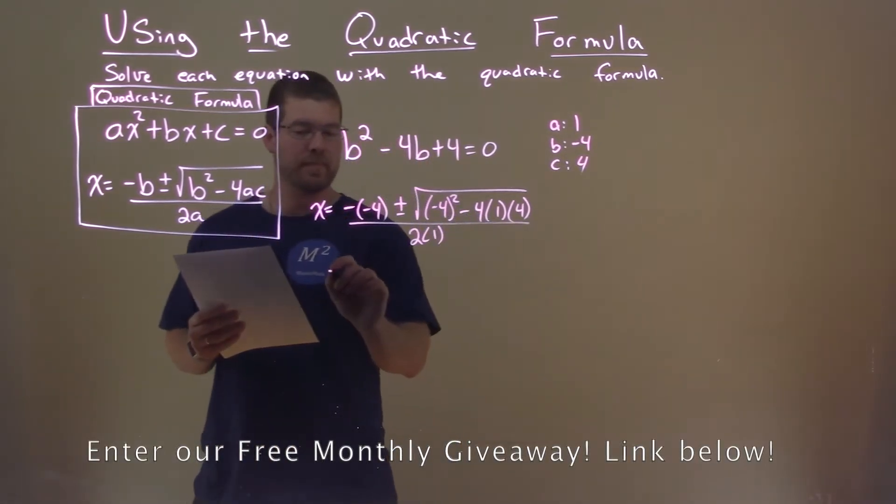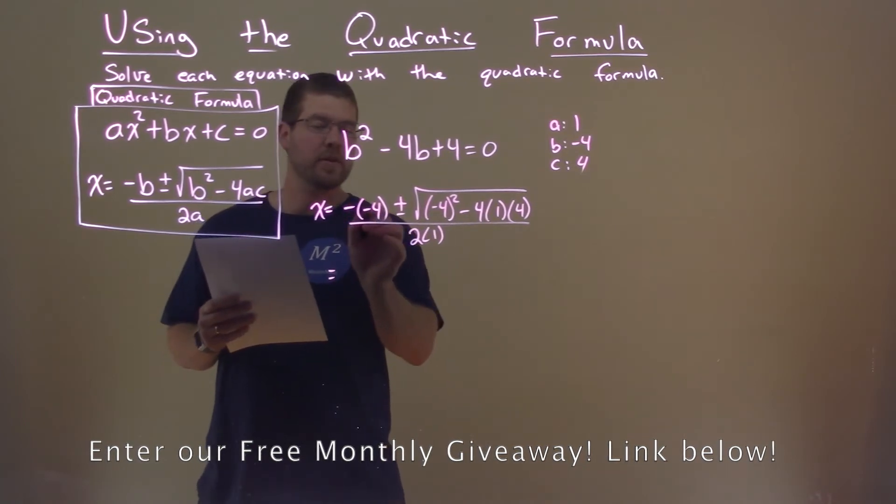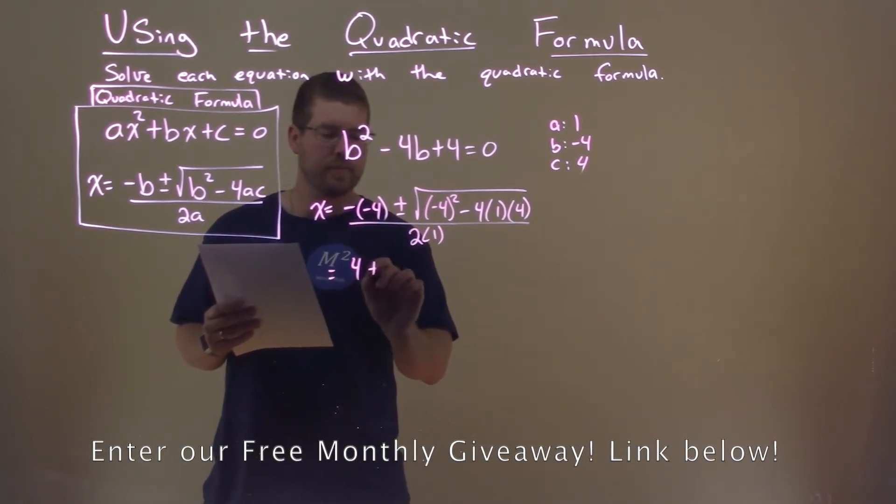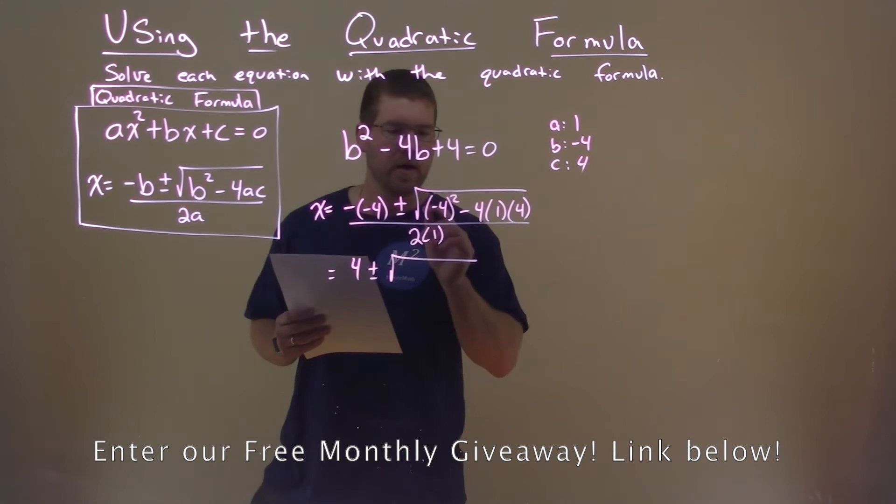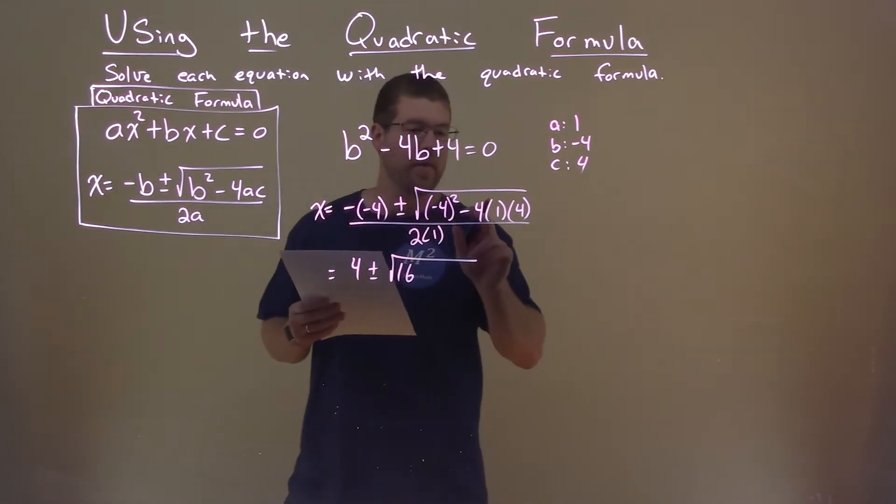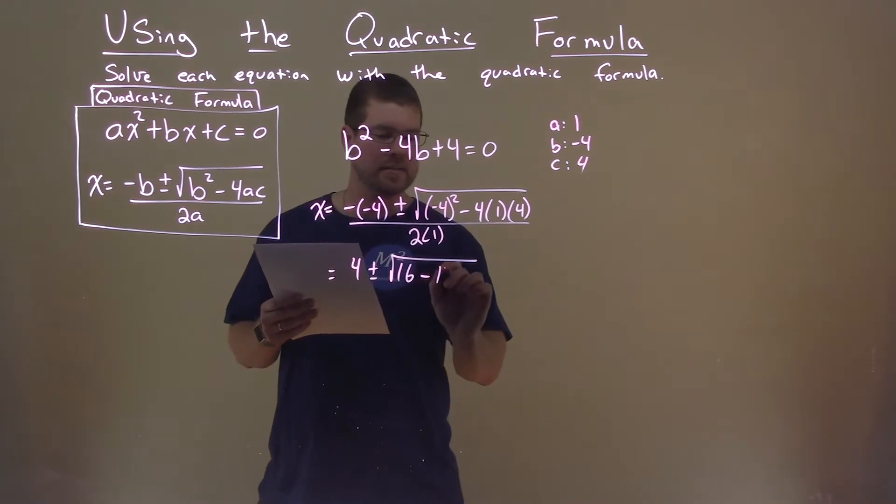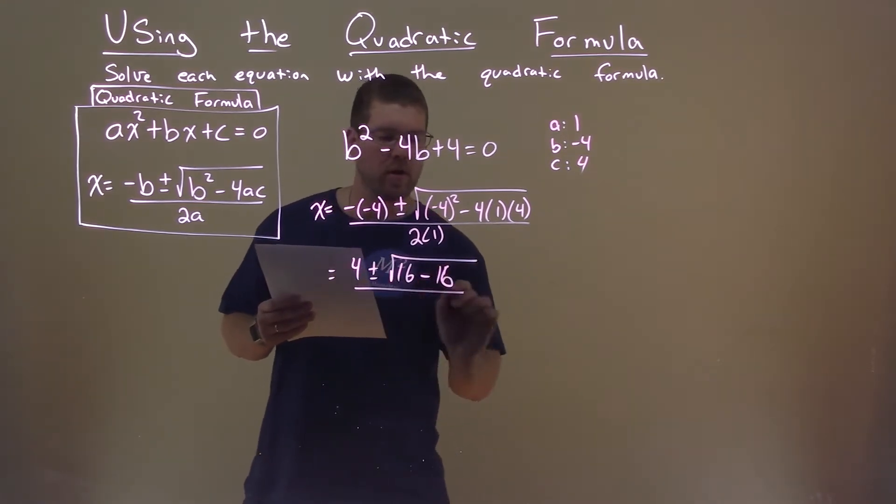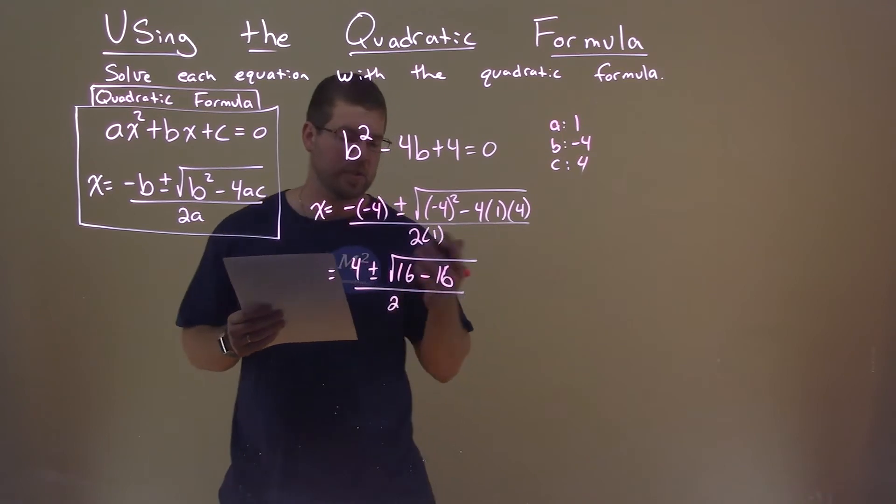And now we just have to simplify. Negative times negative 4 is positive 4, plus or minus the square root. Negative 4 squared is 16, and then 4 times 4 again is 16. That's all over 2 times 1, which is 2.